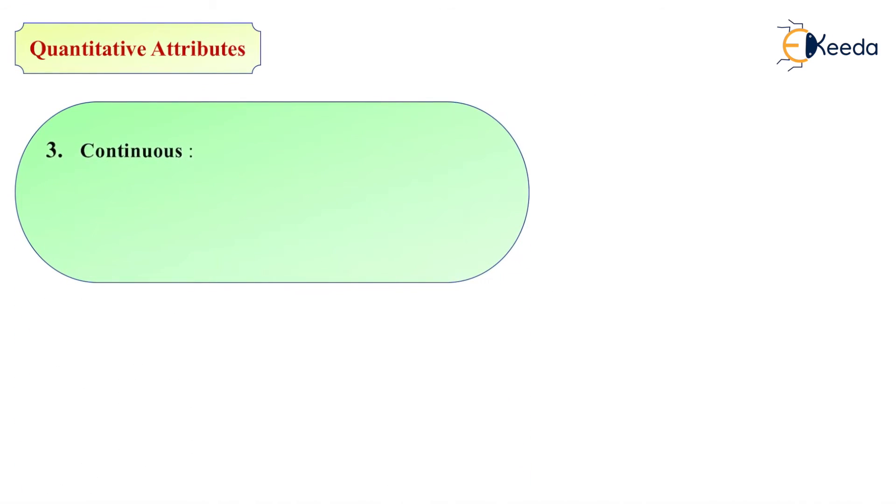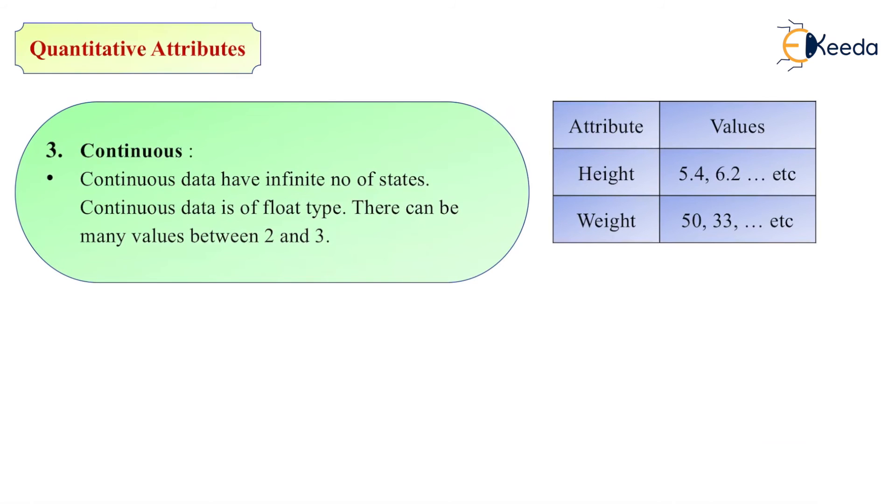Next is continuous data type. In continuous data, having an infinite number of states, continuous data is of float type. We have seen the data type which can store numerical type or real data type, but not floating point. So if you want to store floating point data, then you can use continuous data type. There can be many values between two and three. The attribute is height - we can say 5.4 inches, 6.2 inches. Weight is 50 kg, 32 kg, 33 kg, etc. As we have seen, these are the different data types available in different attributes.